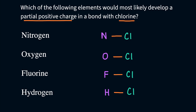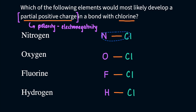We want to find out which one of these — nitrogen, oxygen, fluorine, or hydrogen — would have a partial positive charge. Partial positive charges have everything to do with polarity, and with polarity comes electronegativity. So we are going down the electronegativity route. There are a couple of ways to do this: we could use the electronegativity trend, or we could grab the electronegativity values from a periodic table.